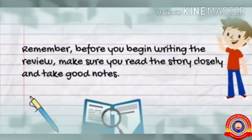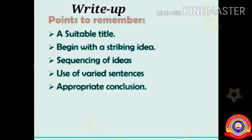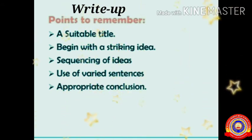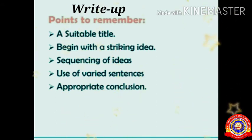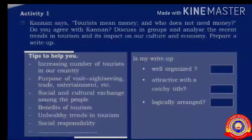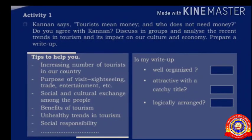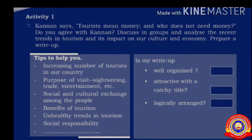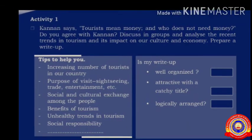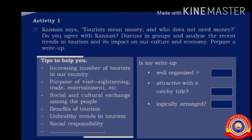The second activity is a write-up. What are the points to remember? There should be a suitable title; begin with a striking idea. Use varied sentences and an appropriate conclusion. The topic here is about contents — words, tourist, money — and who doesn't need money? Here are some tips to help you write this. After writing, evaluate whether your write-up is well-organized, attractive, and logically arranged.